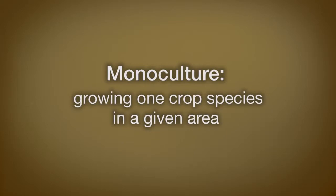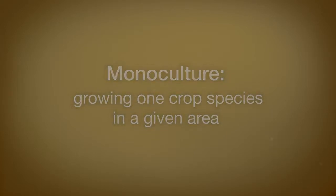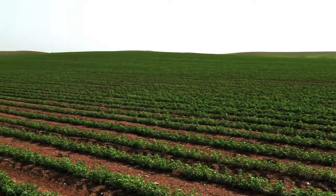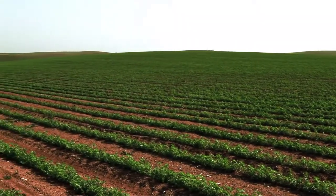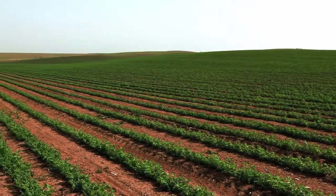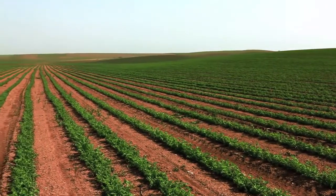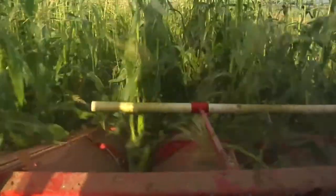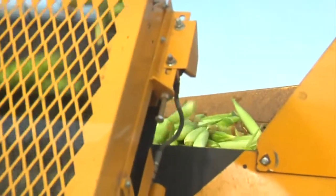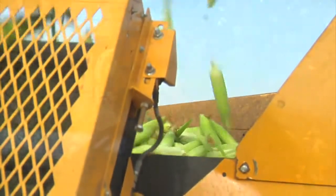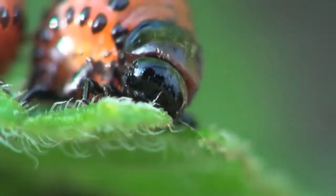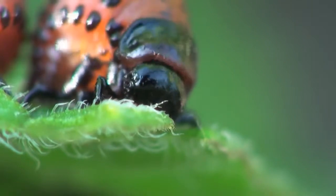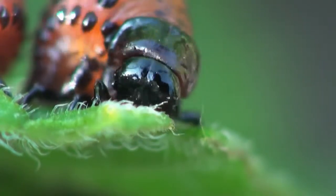Commercial agriculture typically uses monocultures — large, evenly spaced rows with one species — which leads to minimal biodiversity. This has improved agricultural productivity and allows large areas of land to be planted, treated, and harvested all at the same time. However, monocropping makes crops more vulnerable to pest invasions, because a large expanse of a single crop species represents a vast food supply for any pest that specializes on that one crop.